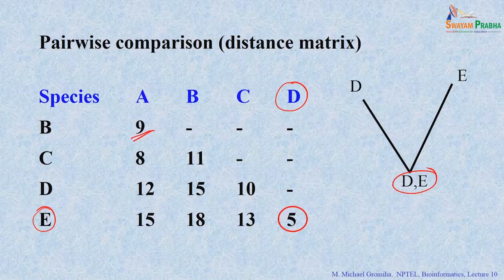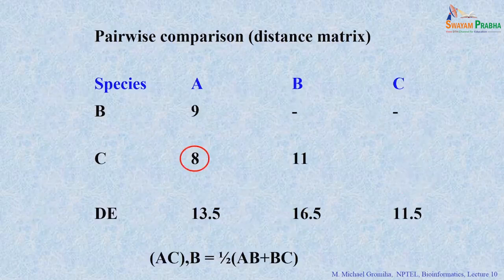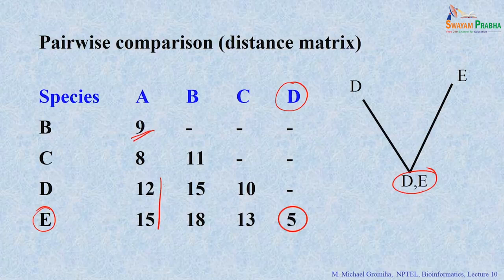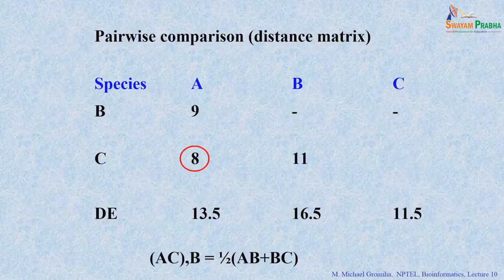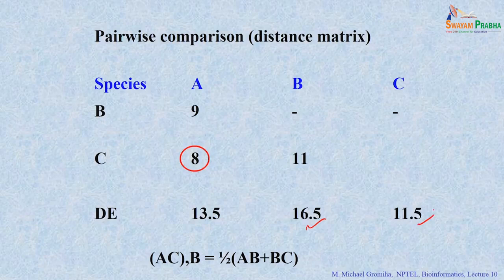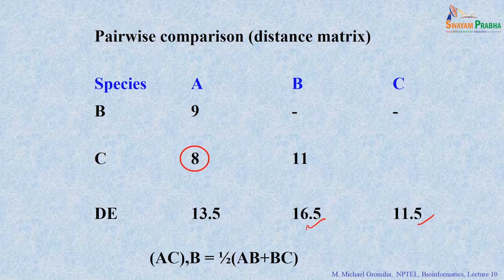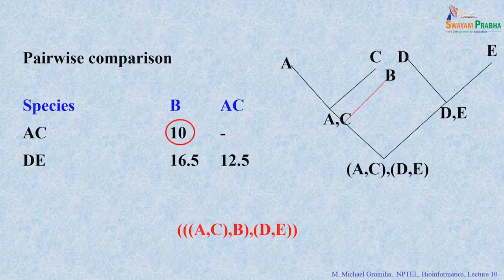In the new matrix, the numbers are: AB = 9, AC = 8, B–DE = 16.5, A–DE = 13.5, C–DE = 11.5. The lowest value is 8, which means A and C are close to each other. We combine A and C next. The AC-to-B distance = (AB + CB) / 2 = (9 + 11) / 2 = 10. The AC-to-DE distance = (A–DE + C–DE) / 2 = (13.5 + 11.5) / 2 = 12.5.